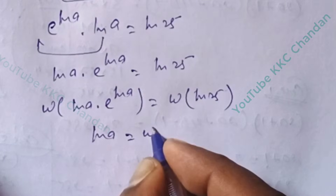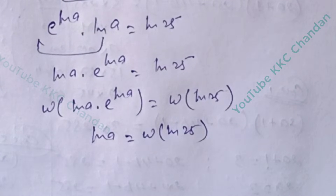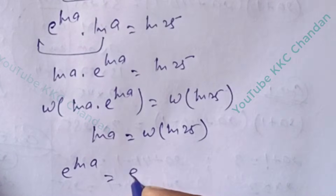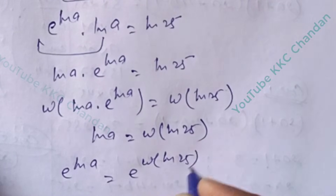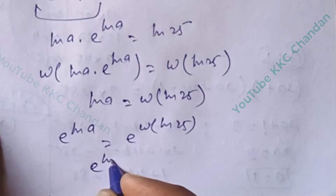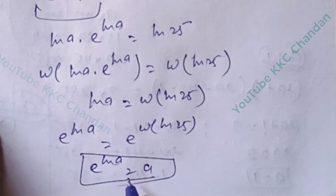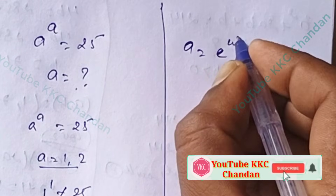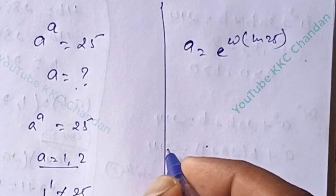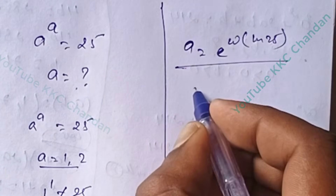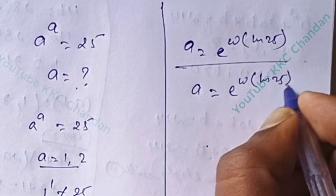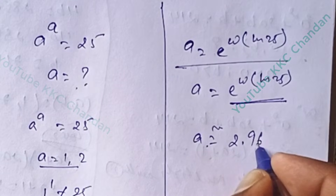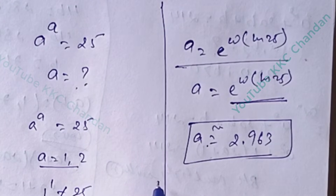Using the W function form, ln(a) = W(ln(25)). In the next step, e^(ln a) = e^(W(ln 25)). We know that e^(ln a) = a, so therefore a = e^(W(ln 25)). The value of this is approximately a ≈ 2.963. This is the final value of this simplification.